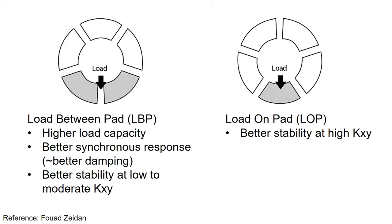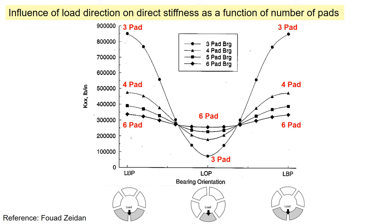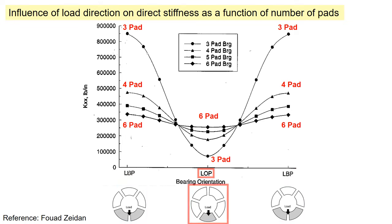Let's examine the load comparison between load between pad and load on pad. Load between pad demonstrates high load capacity and improved damping characteristics. The impact of load direction on direct stiffness related to the number of pads is also shown. In the case of load between pads, an increasing number of pads results in a decrease in bearing stiffness, while for load on pad, an increasing number of pads leads to an increase in bearing stiffness.